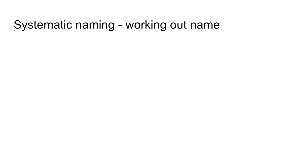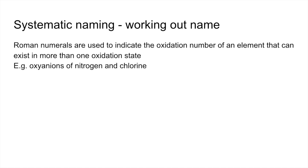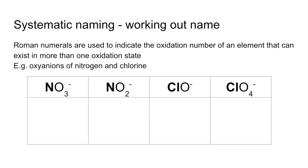To finish, here's how oxidation numbers are used when naming compounds — called systematic naming. Roman numerals indicate the oxidation number of an element that can exist in more than one oxidation state. We'll look at the oxyanions of nitrogen and chlorine: two nitrogen oxyanions and two chlorine oxyanions, each being the element combined with oxygen and carrying a negative charge.